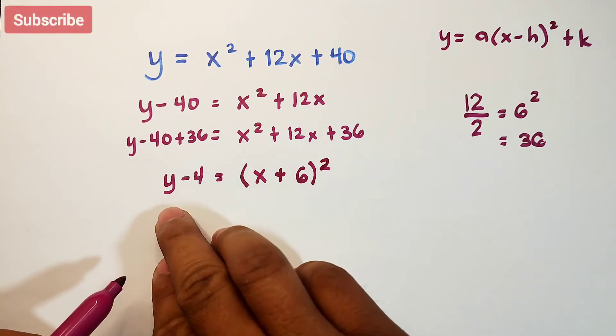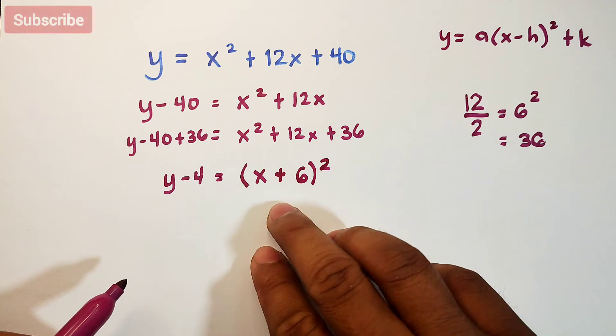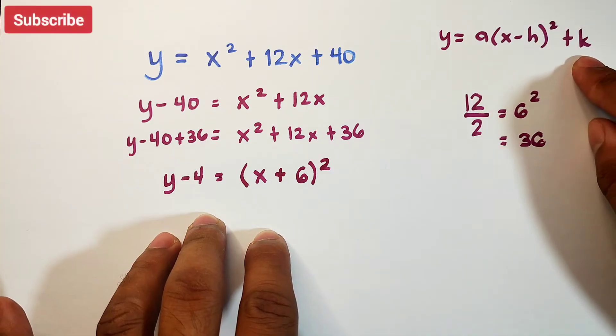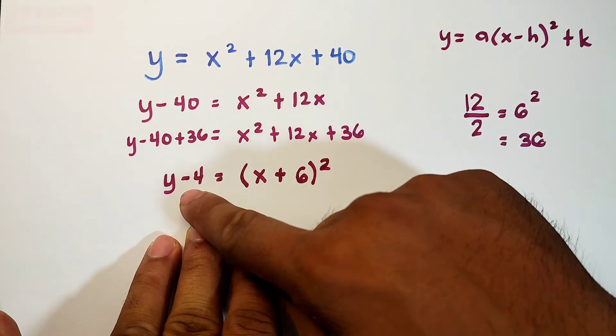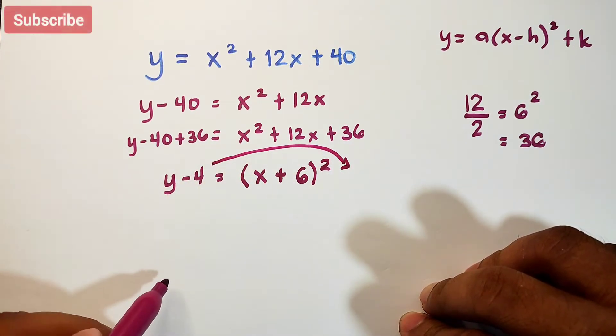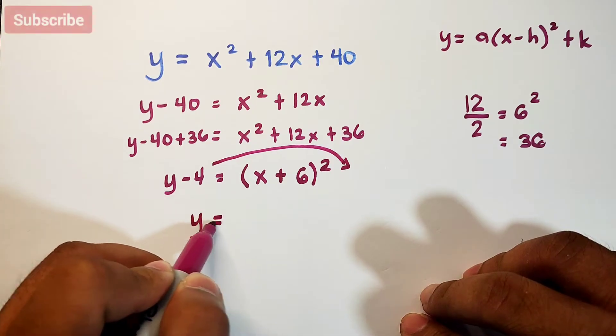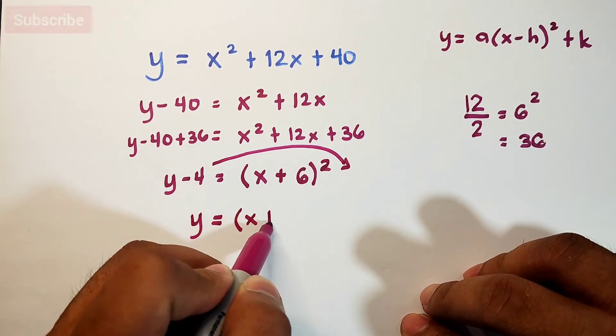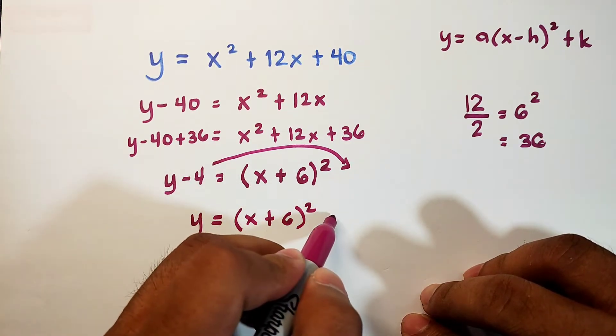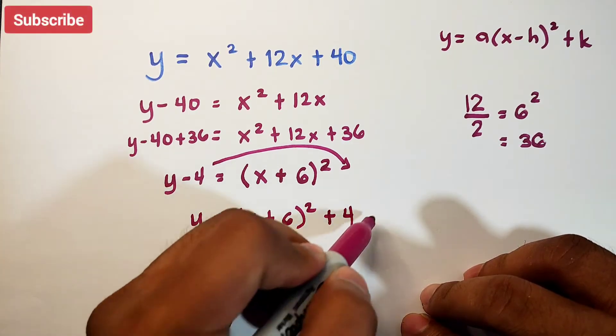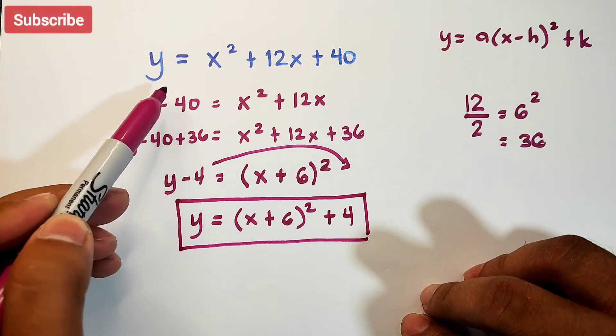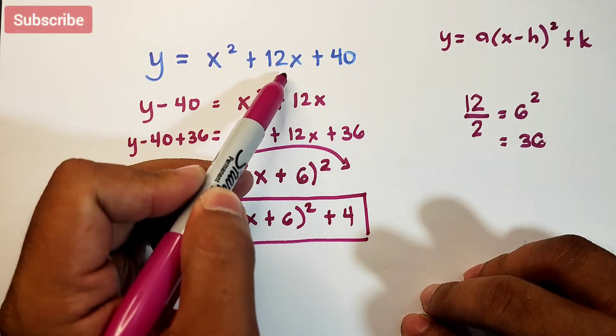Now we have y minus 4 equals x plus 6 raised to the second power. Since our target is this, we need the plus k. We will move this negative 4 to the other side. It becomes y equals x plus 6 squared plus 4. This is now the vertex form of the quadratic function y equals x squared plus 12x plus 40.